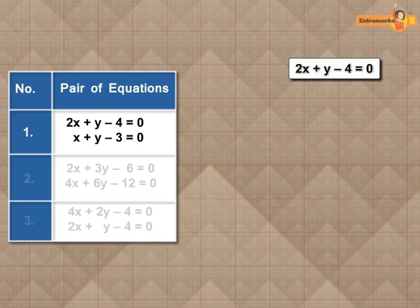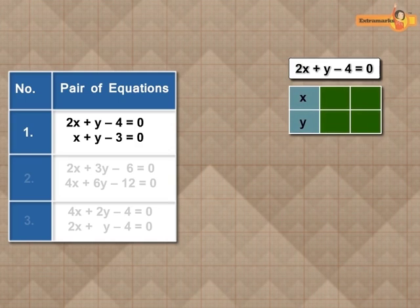In the first equation, 2x plus y minus 4 is equal to 0. If we consider x is equal to 0, then we get y is equal to 4. And if we consider y is equal to 0, then we get x is equal to 2.